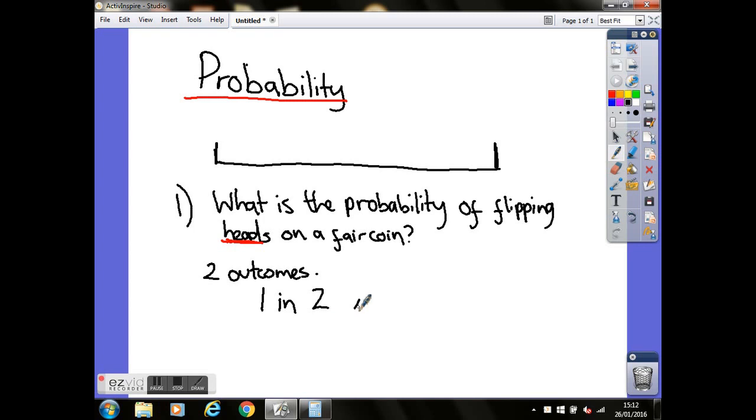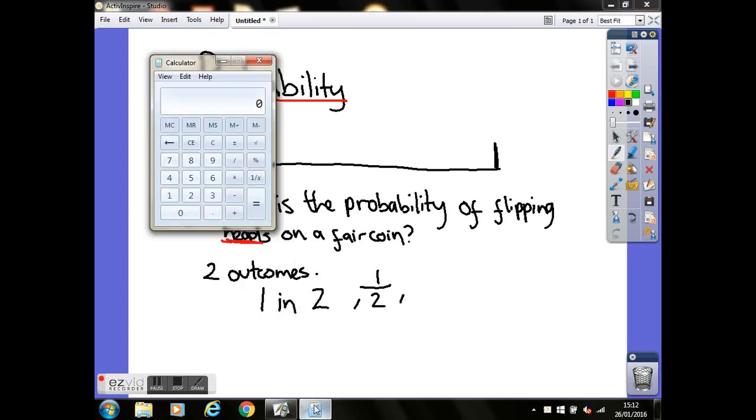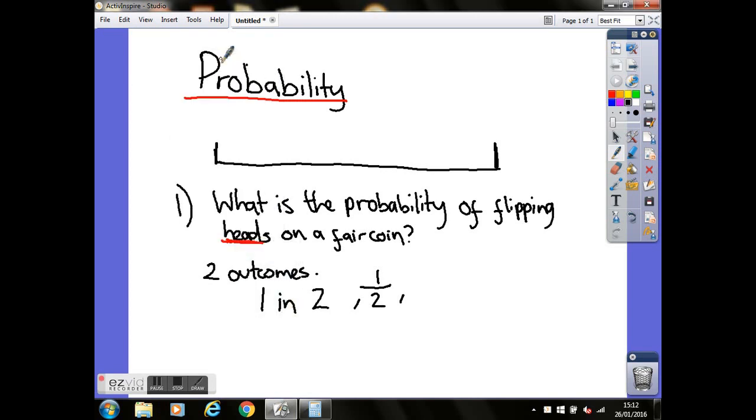What we'd normally do if we're looking at probability is actually write that as a decimal. So first of all, one in two would be the same as a fraction, so the chance of it happening is a half, one over two. But as I say, it's more common that we'd write that as a decimal. So we need to convert that to a decimal by doing top number divided by bottom number. So I'm going to bring the calculator up and do one divided by two, and that gives you 0.5 as your decimal answer.